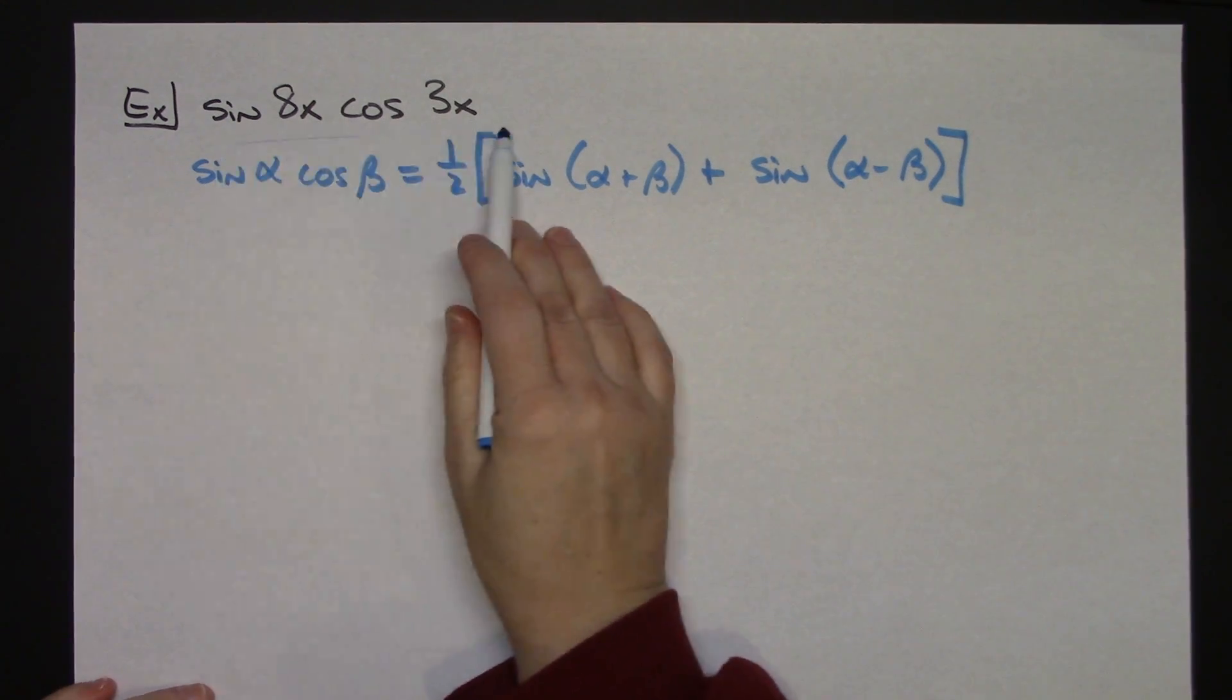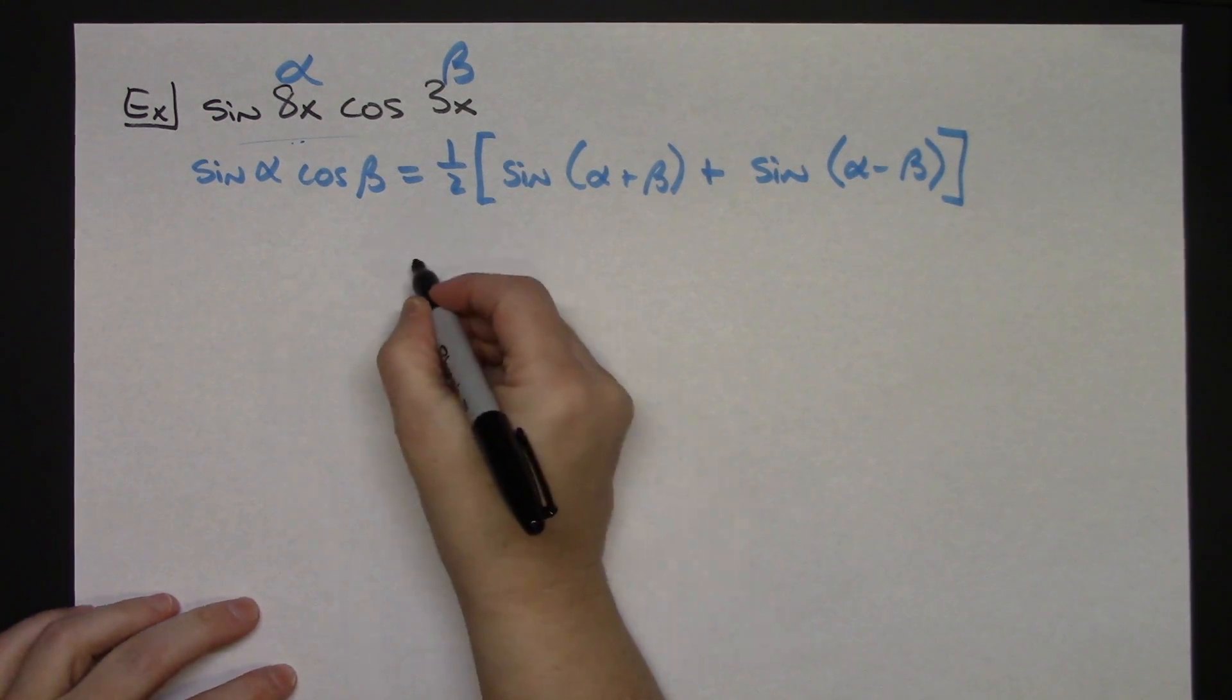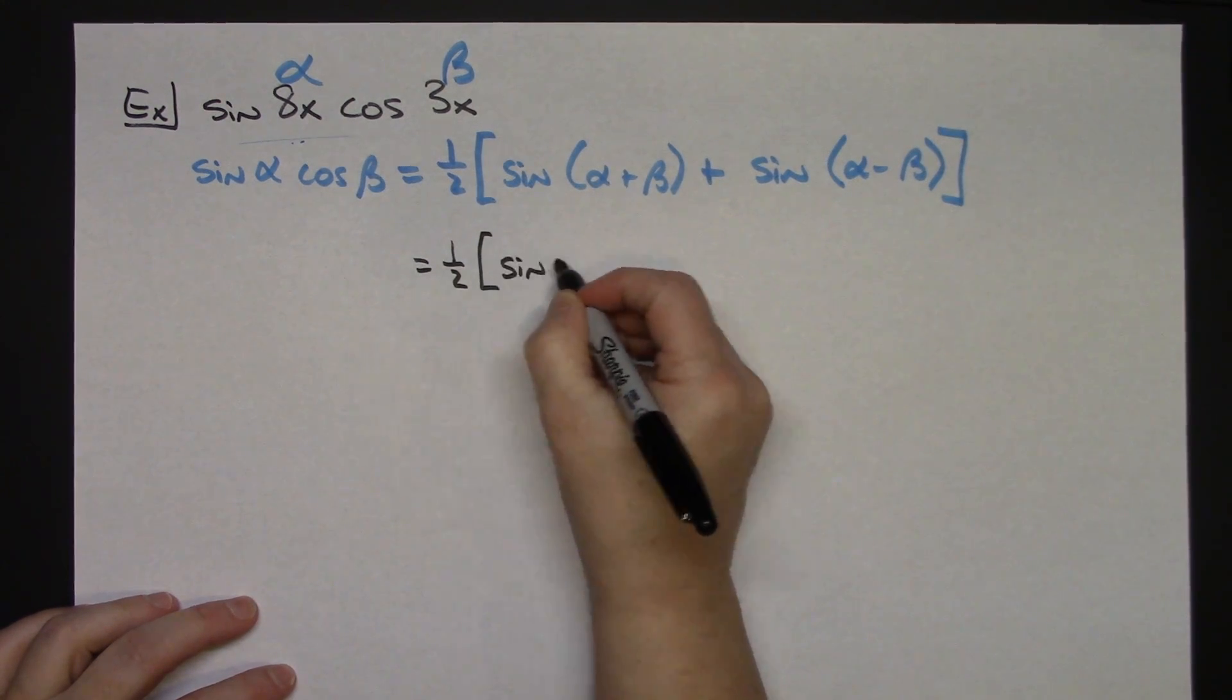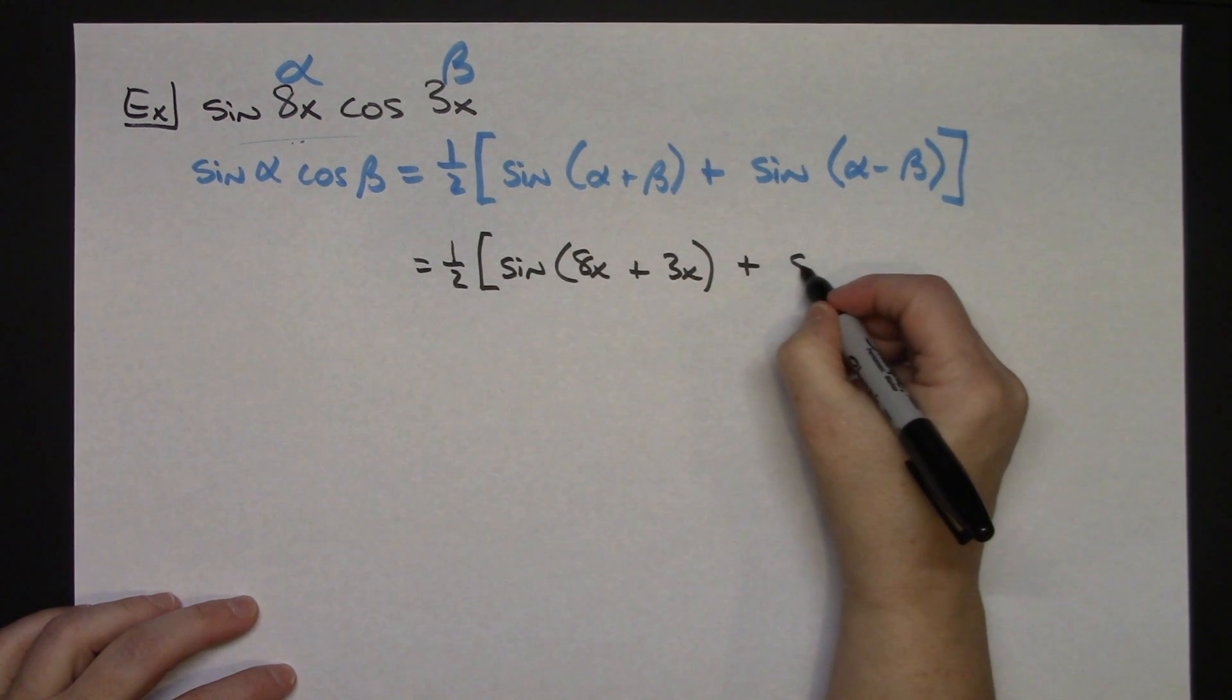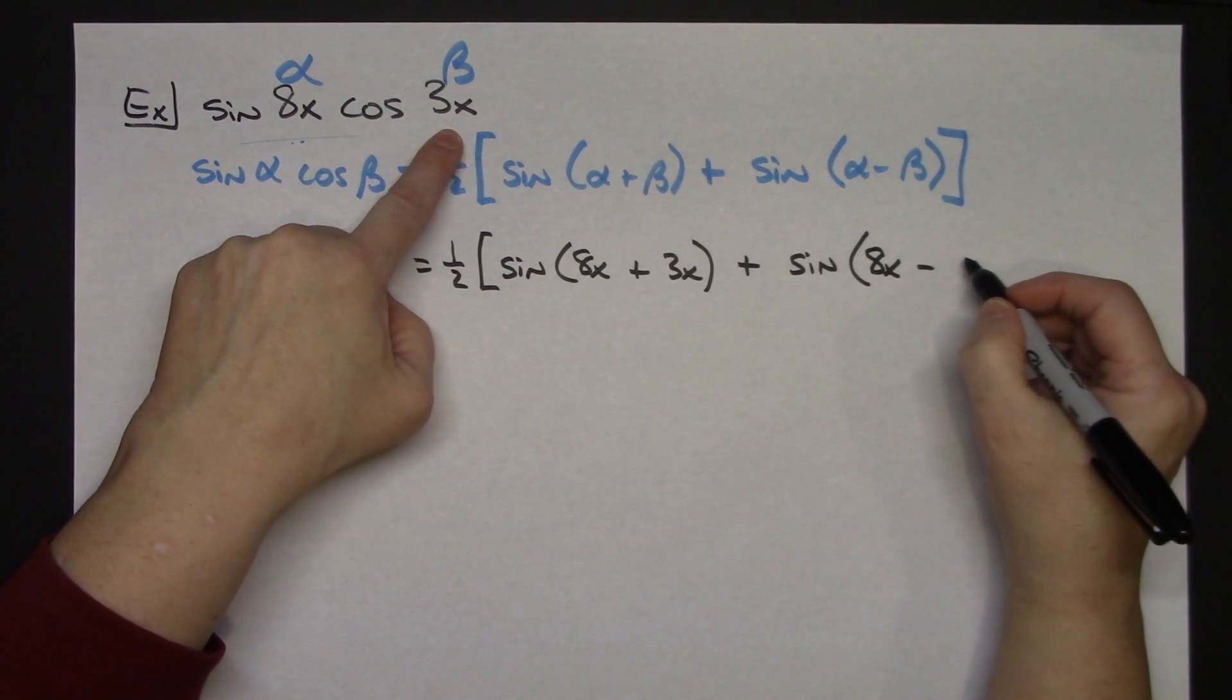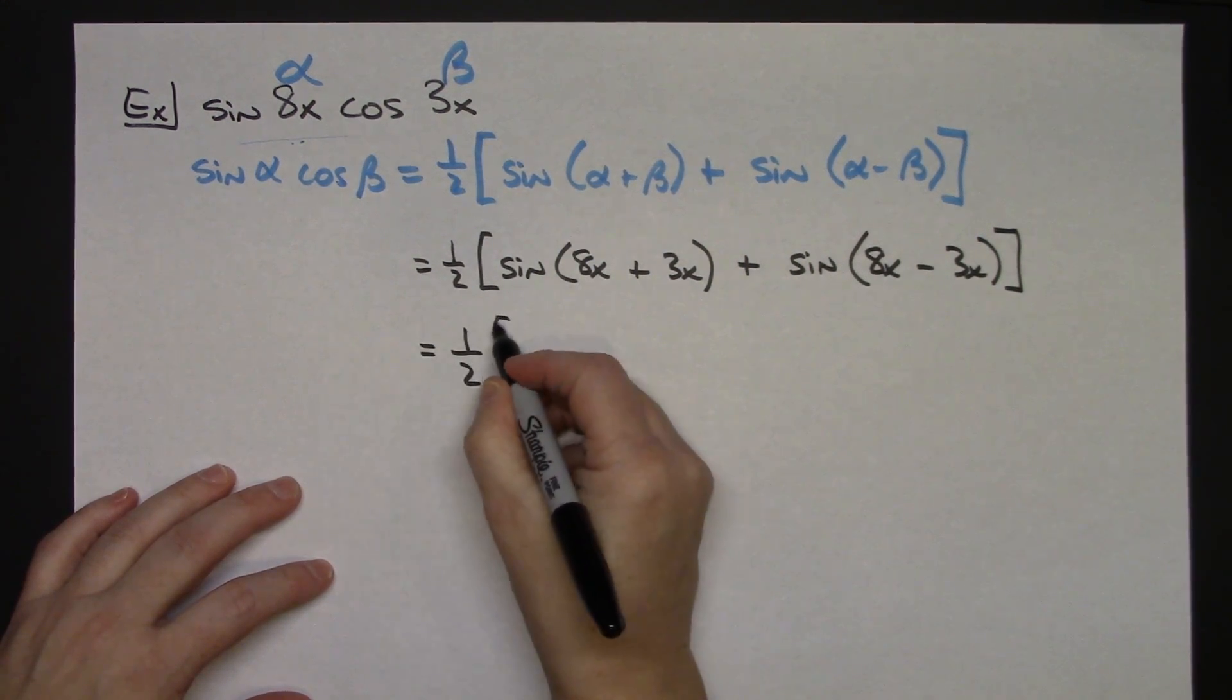Now again, in this order, this first value right here is going to be my alpha, the second value right there is going to be my beta value. Again I am just going to do a direct substitution here. So I'm going to start with the right hand side of this equation. I'm going to keep my 1 half right there. I will have a sine, I'm going to plug in my 8x, I'm going to plug in the 3x for beta plus sine, plug in alpha at 8x minus beta 3x. Anytime you can do simplifying inside, you need to do that.